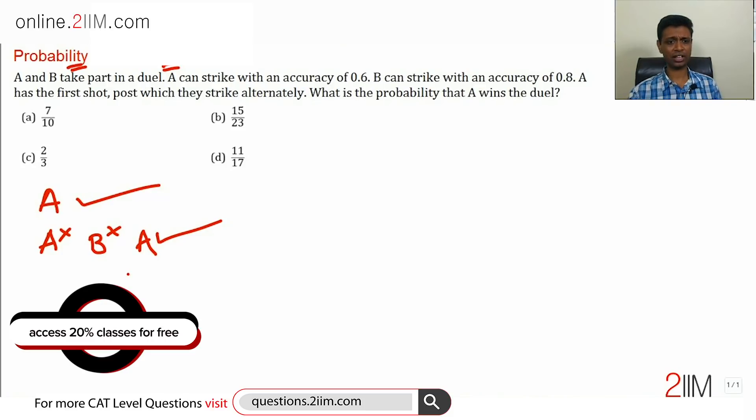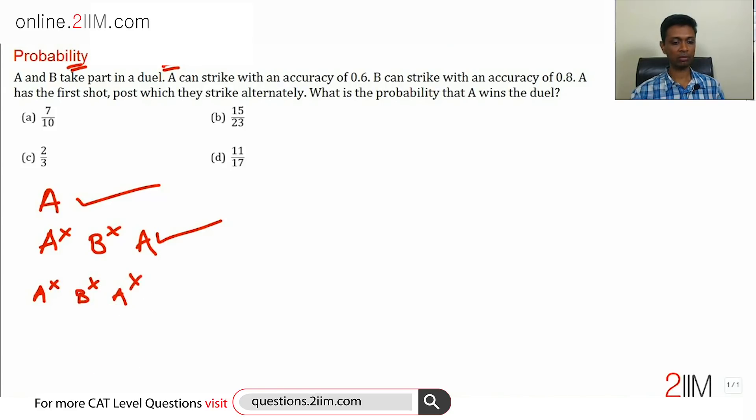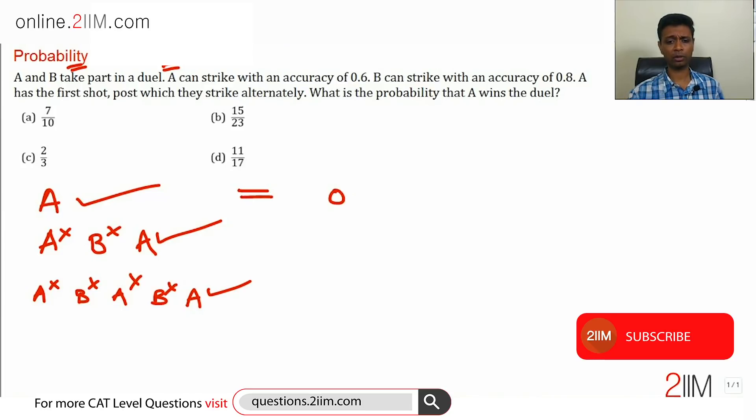A gets a second chance because B also misses. A misses, B misses, A misses, B misses, and then A gets it right. You can win on shot one or shot three or shot five or shot seven and so on.